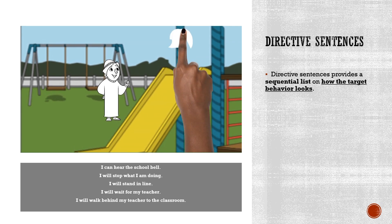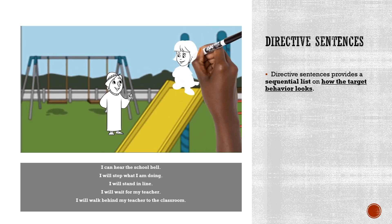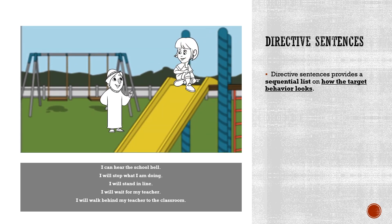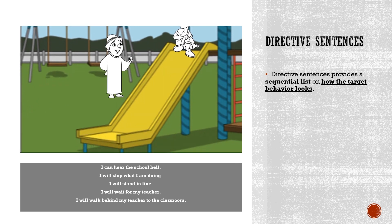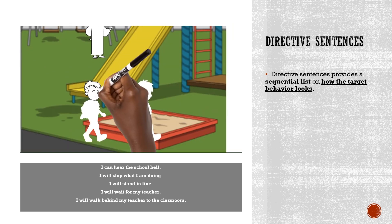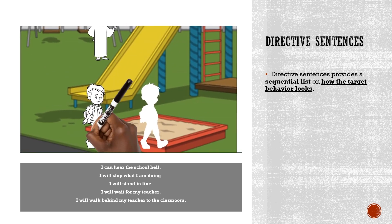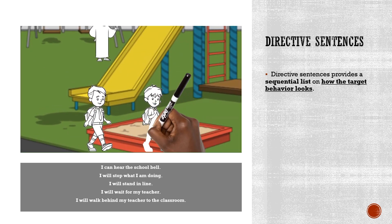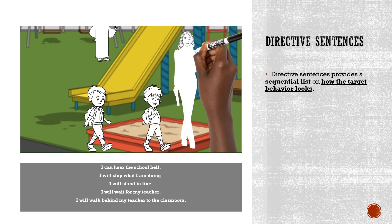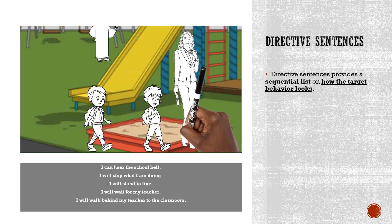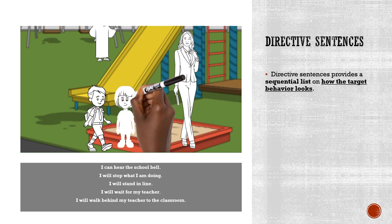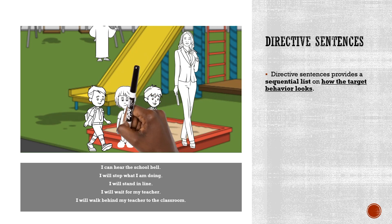Here is an example of a social story written with a majority of directive sentences: 'I can hear the school bell. I will stop what I am doing. I will stand in line. I will wait for my teacher. I will walk behind my teacher to the classroom.'